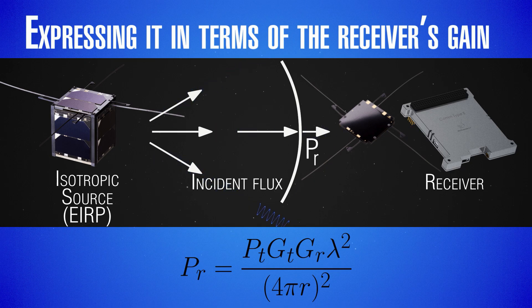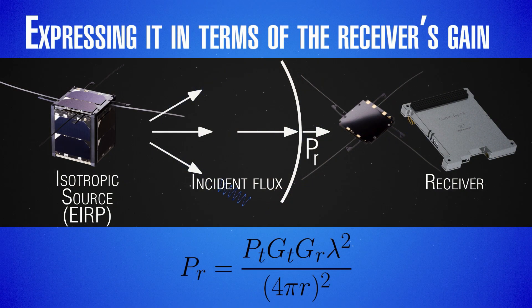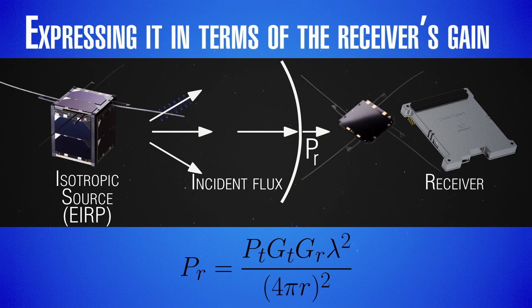You may wonder why there is a wavelength dependence — shouldn't all electromagnetic waves decay the same way with distance? The reason is that we have expressed everything in terms of antenna gains rather than effective areas. Since gain is a function of wavelength, this is where the λ comes from. Actual electromagnetic waves in vacuum decay in the same way — flux drops as 1/r² — but the wavelength appears simply because of the way the formula is written in terms of gains.